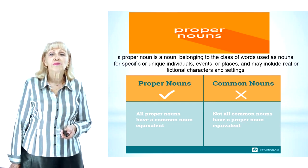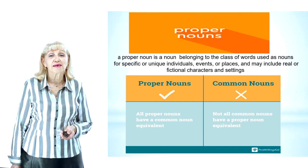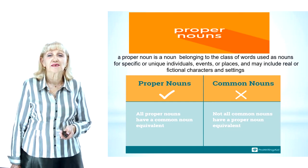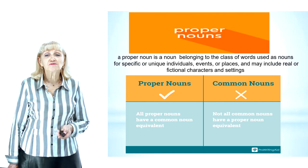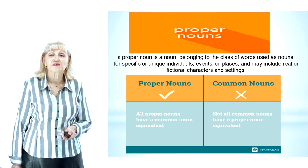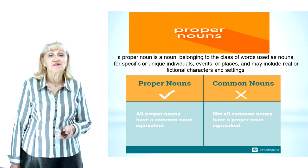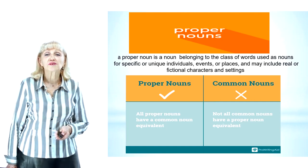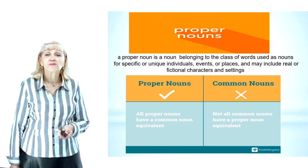We all know that nouns are one of the parts of speech in the English language. In English grammar, a proper noun is a noun belonging to the class of words used as names for specific or unique individuals, events or places, and may include real or fictional characters and settings. Proper nouns are not typically preceded by articles or other determinants, but there are numerous exceptions, such as the Blacks or the 4th of July. Furthermore, most proper nouns are singular, but again there are exceptions, as in the United States. The main reason for distinguishing between common nouns and proper nouns is to help with classification and capitalization: while proper nouns are almost always capitalized, common nouns never are.